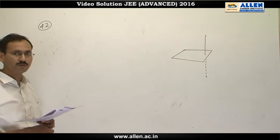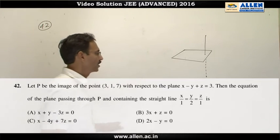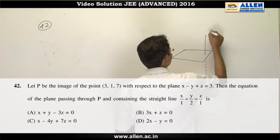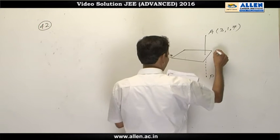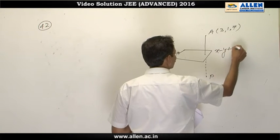In question number 42, P is the image of point (3,1,7) in the plane x - y + z = 3.